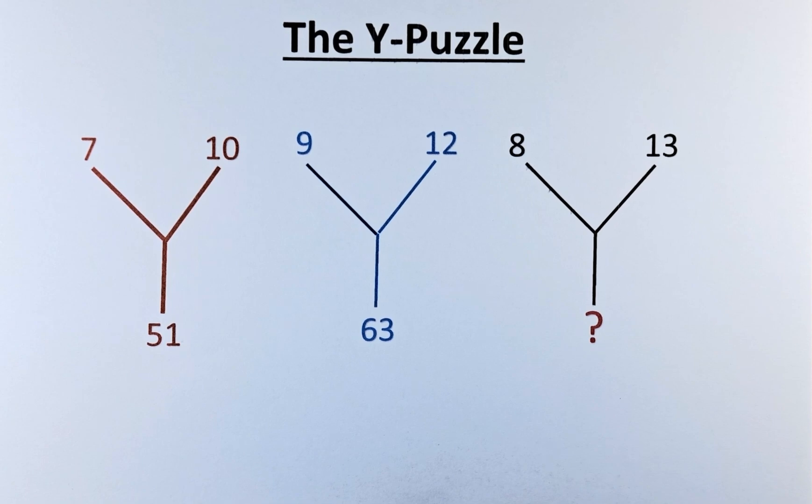Welcome back to the solution of the Y puzzle. The numbers in the Y puzzles are 7, 10 equal to 51. 9, 12 equal to 63. And 8, 13 equal to the question mark.